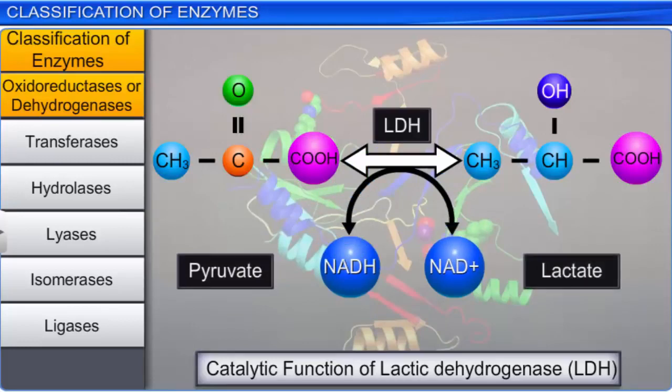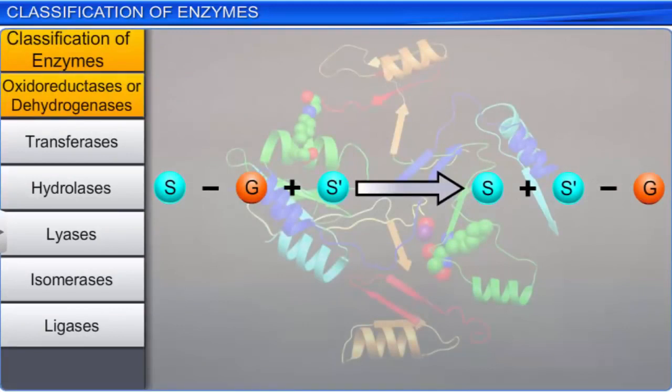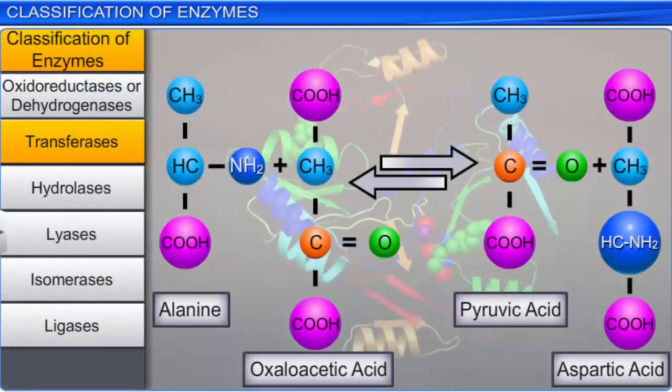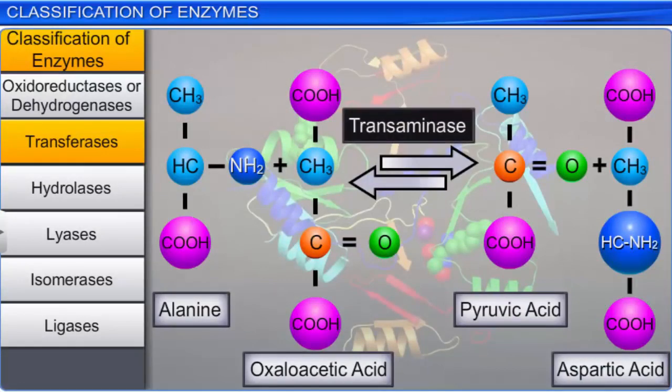The second class of enzymes is transferases. These enzymes catalyze the transfer of a functional group G, other than hydrogen, between the two substrates S and S'. For example, the enzyme transaminase transfers the amino group from alanine to oxaloacetic acid, forming pyruvic acid and aspartic acid.